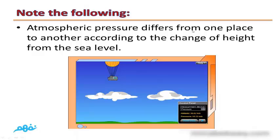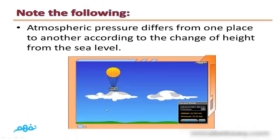The atmospheric pressure differs from one place to another according to the change of height from sea level. By increasing the height, the pressure decreases.